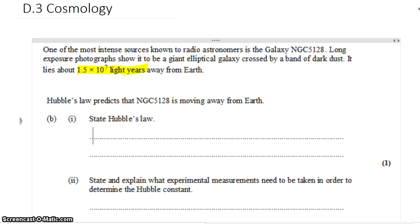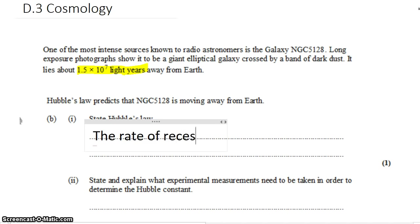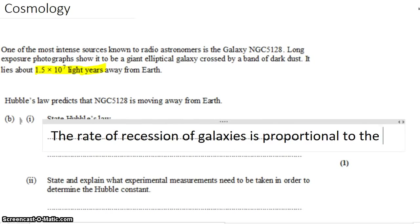Hubble's Law predicts that it's moving away from the Earth. So what is Hubble's Law? Hubble's Law is that the rate of recession of galaxies is proportional to their separation. In other words, the further away a galaxy is, the faster it's moving away.